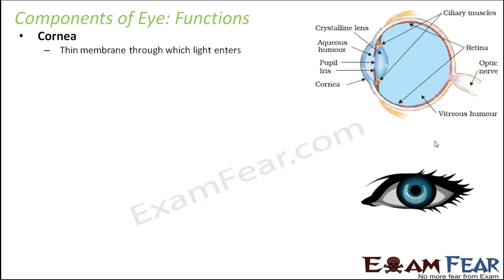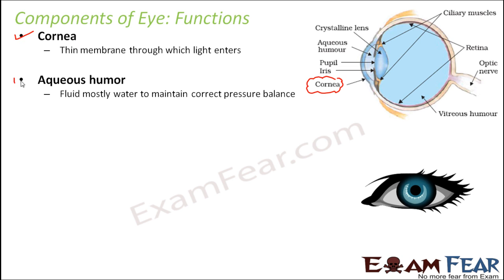Let us start with cornea. Cornea is the outermost membrane through which light enters. It is a comparatively very thin membrane. Why is it thin? Because we want light to enter inside the eye — without light entering inside, reflection cannot take place; without reflection, image formation will not take place; and without image formation, we cannot see anything. So cornea allows light to enter inside — the entire amount of light is allowed to enter. Then comes the aqueous humor, which is the fluid filling the space immediately after the cornea.